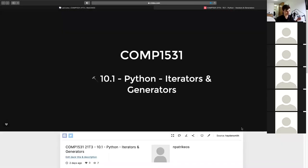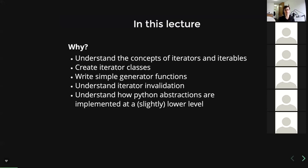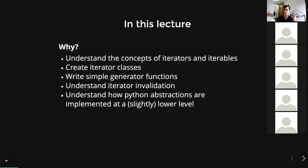Let's make a start. Iterators and generators — these are two probably pretty abstract words at this point. But this lecture is about what an iterator is, what an iterable is, and what a generator is. We're going to learn to write some very simple generator functions, understand what iterator invalidation is and how it can cause bugs, and start to delve into the anatomy of Python — how Python provides these really useful magical abstractions and how they're actually implemented under the hood.